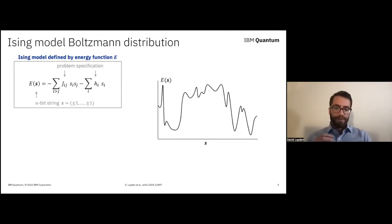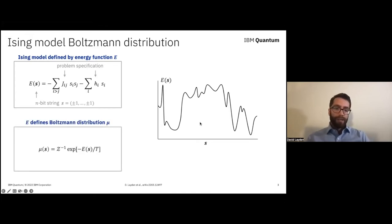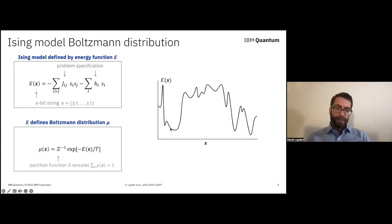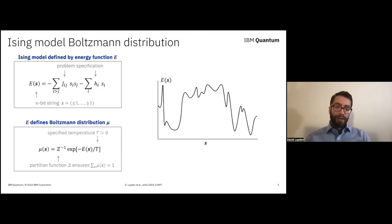This function by itself is not a probability distribution, but it does define the distribution that we'll ultimately be interested in: the corresponding Boltzmann distribution, which assigns some probability mu of s to every bit string s, proportional to the negative exponential of the energy of s divided by some coefficient t. This z out front is called a partition function, and it's just a normalizing constant to make sure that all these probabilities sum to 1. This parameter t is often called the temperature in physics, and it's just some positive parameter given to us as part of the problem specification.